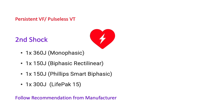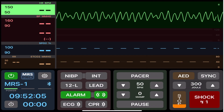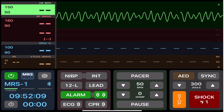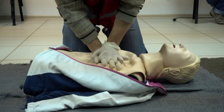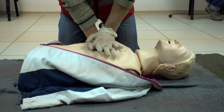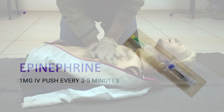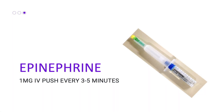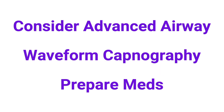At two minutes, stop CPR, switch roles, and analyze the rhythm. If the rhythm is still VF, deliver your second defibrillation — follow the recommendation from the manufacturer — and immediately resume high quality CPR. At this time, give the epinephrine prepared earlier: one milligram, and repeat that dose every three to five minutes. Also consider placing an advanced airway.